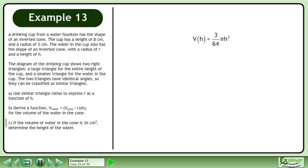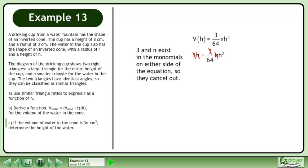Start with the volume function, v of h equals 3 over 64 pi h cubed. Replace volume with 3 pi. 3 and pi exist in the monomials on either side of the equation, so they cancel out.